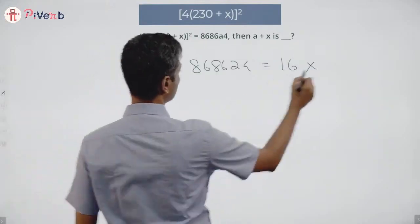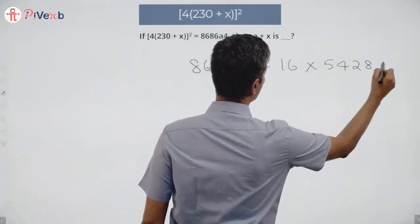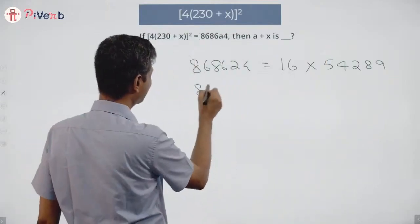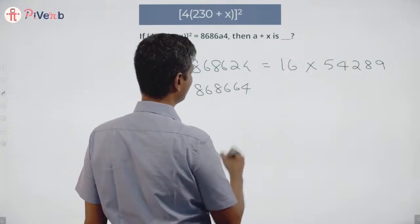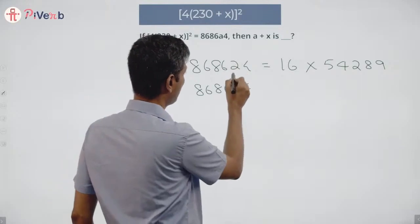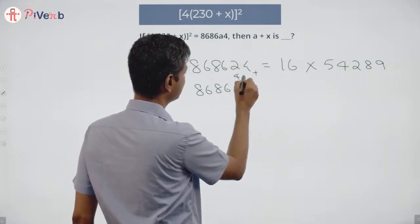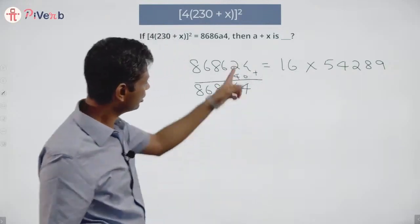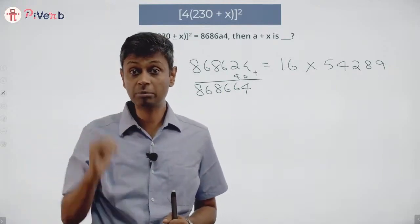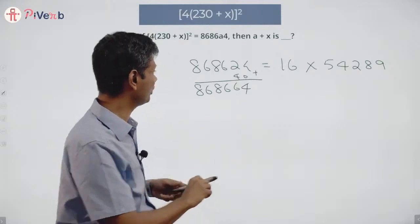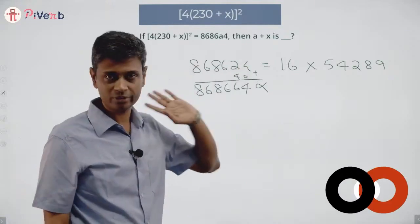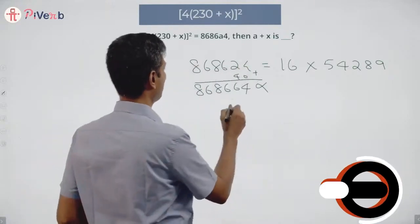868664. I have 868664, this number plus 40. If the number is a multiple of 16, I add 16 to it will be a multiple of 16, I add 32 to it will be a multiple of 16, I add 40 to it it won't be a multiple of 16. I don't have to worry about this. I have to worry only about this. First step I know a is equal to 2.